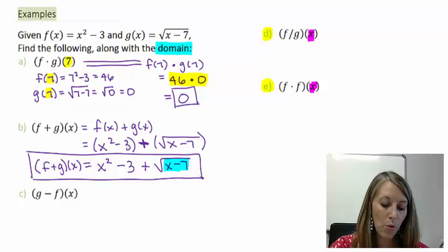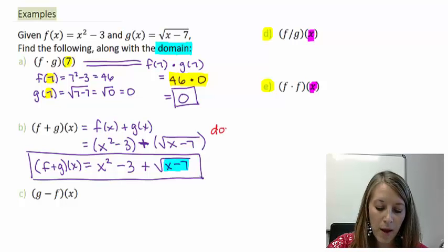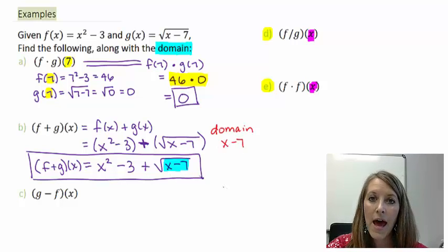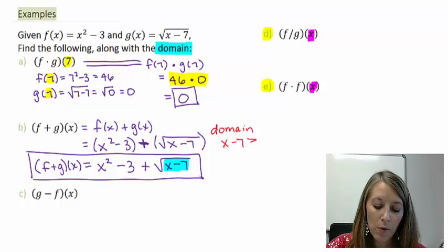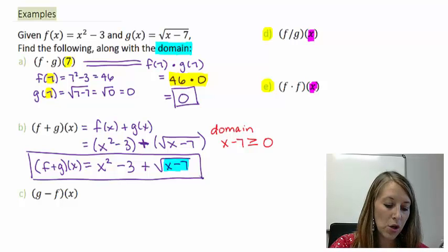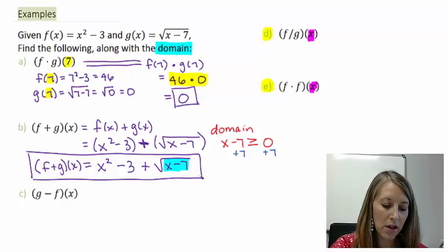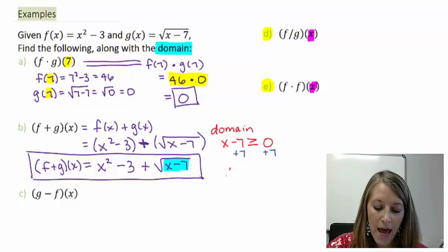In this instance, we don't have any denominators. We don't have any word applications, but we do have a square root involved. So we know that this square root has to end up to be positive. So the way that we solve domain for this problem is we know the inside of our square root, specifically x minus 7, has to be positive.